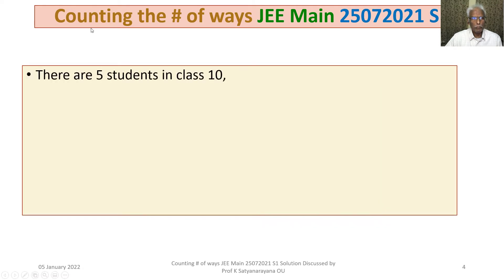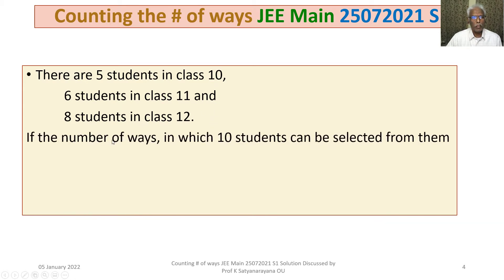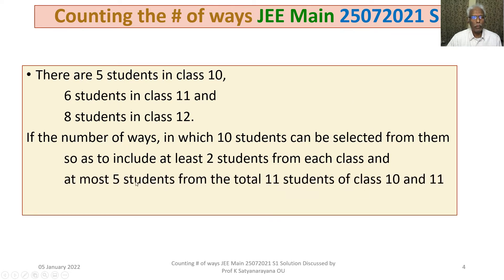The problem is: there are 5 students in class 10, 6 students in class 11, and 8 students in class 12. The number of ways in which 10 students can be selected from them such that at least 2 students are from each class and at most 5 students from the total 11 students of class 10 and 11 is 100k.